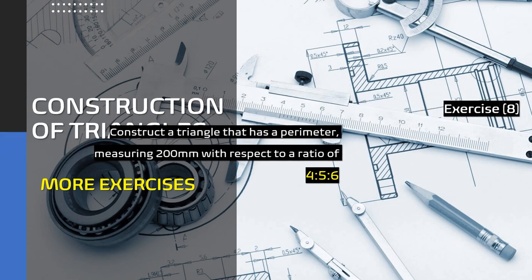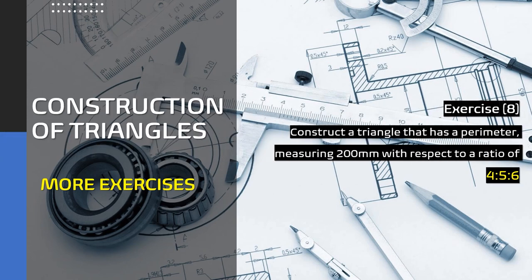Now let's look at Exercise Eight. Exercise Eight is very interesting because this time we haven't been given any information regarding the geometric parameters — no base length, size of the triangle, or base angle. Instead, we've been given information regarding the perimeter, which is simply the distance around the periphery of the triangle. We need to construct a triangle with a perimeter of 200 millimetres, and the ratio of the sides is given as 4:5:6.